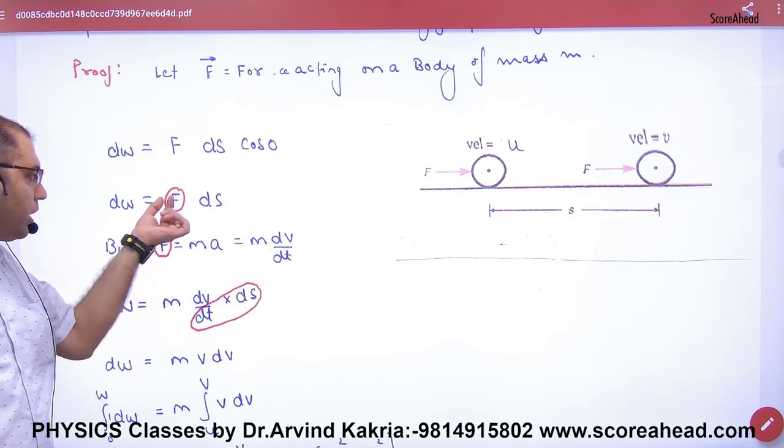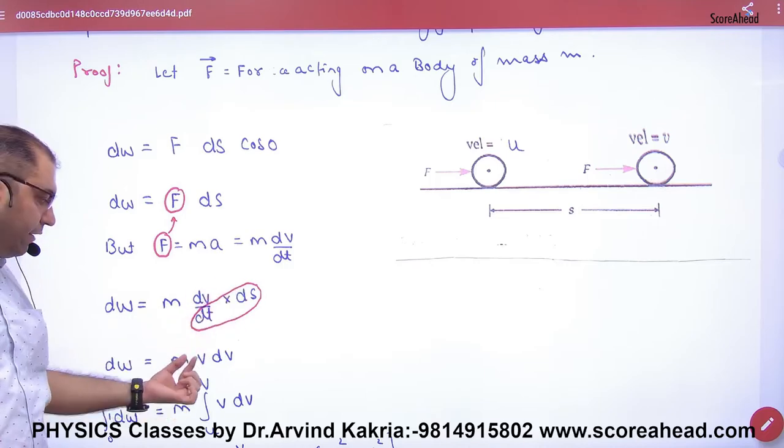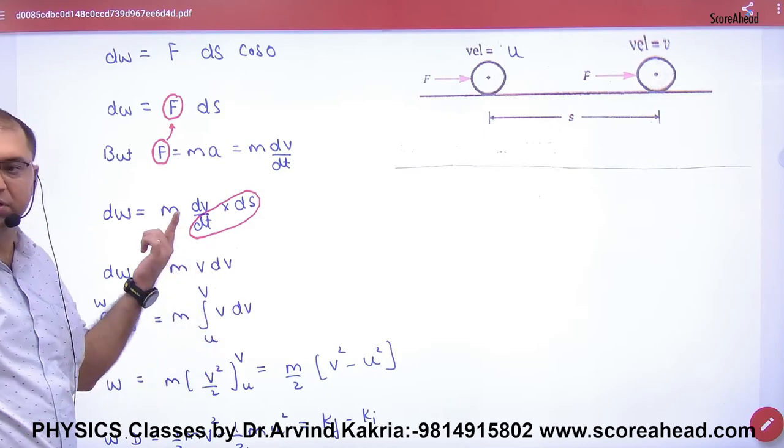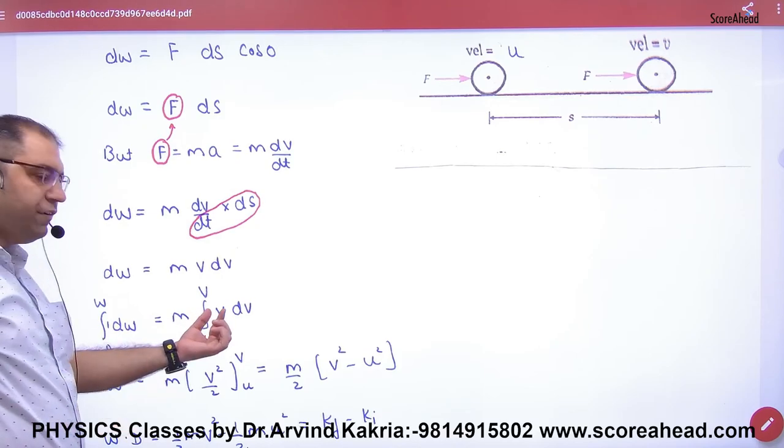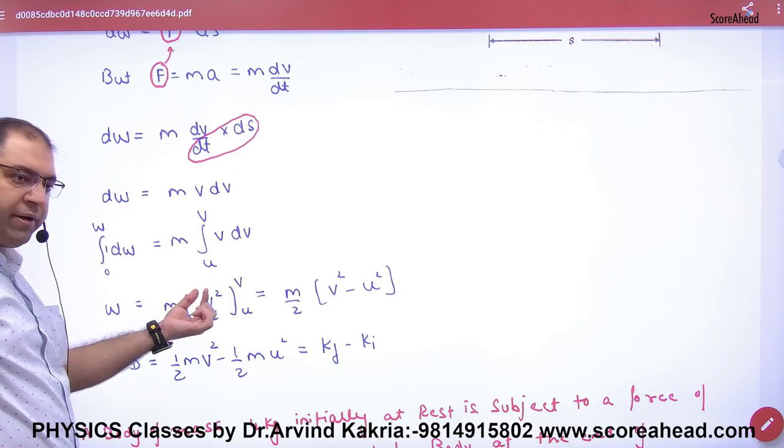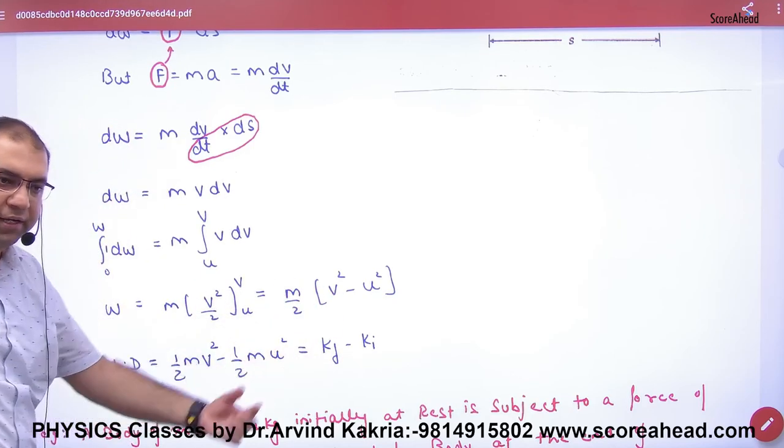This force here, m dv/dt times ds. ds/dt is v. But the limit - there is a difference in kinetic energy from u to v. So work done is integration of m v dv from u to v, upper limit v, lower limit u, minus minus. This is change in kinetic energy.